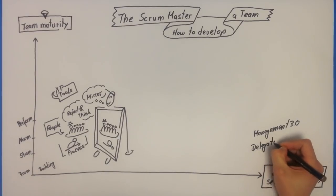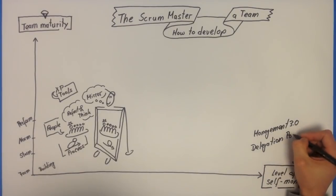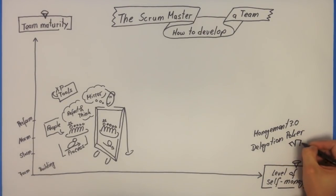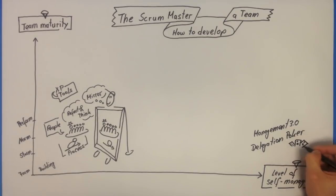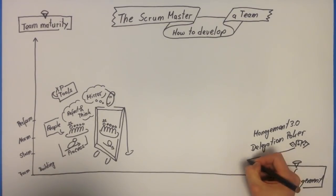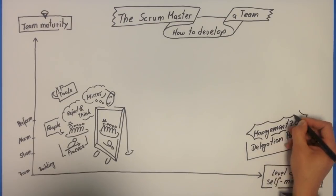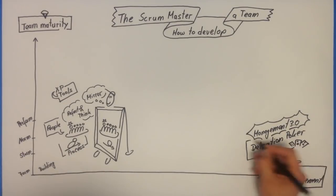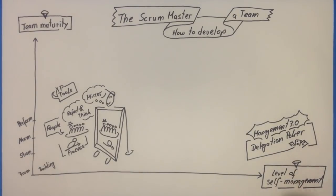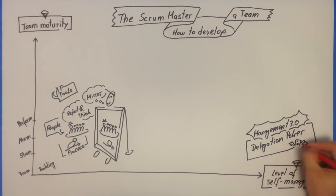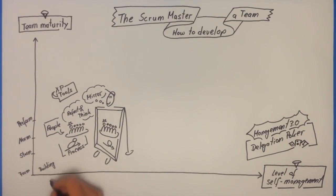We may know that from things like Management 3.0, where you have something called delegation poker. You sit together and play cards between the management and the Agile team, and you resolve how you want to deal and how you want to self-manage or manage different issues together. In the beginning, with an early or non-Agile team, you have a command-and-control structure.